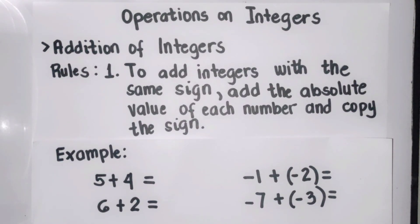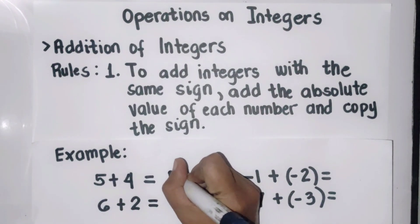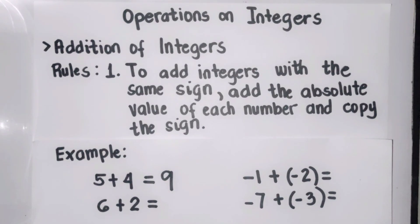Hi everyone. In this video, let me show you how to perform operations on integers. Let's start with addition of integers. We have rules to follow. Rule number one: to add integers with the same sign, add the absolute value of each number and copy the sign. First example: five plus four equals nine, and since both five and four are positive, our answer is also positive.